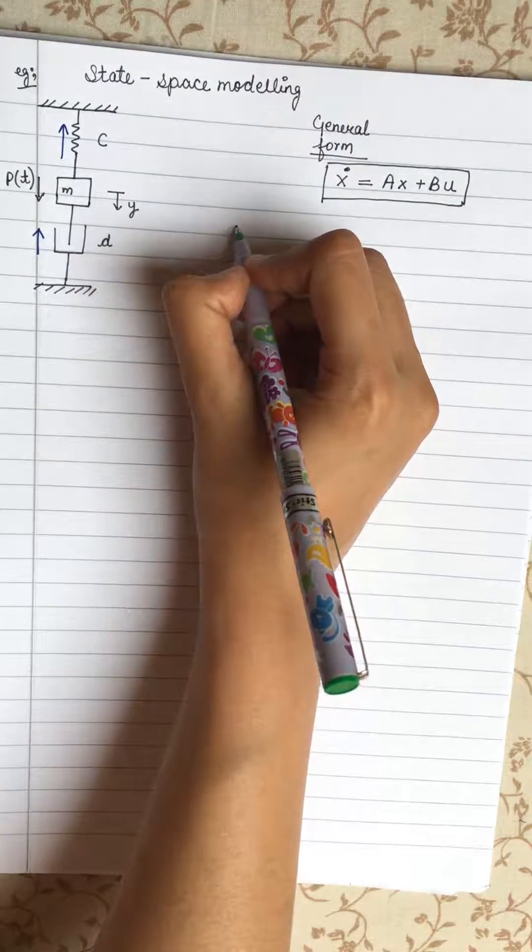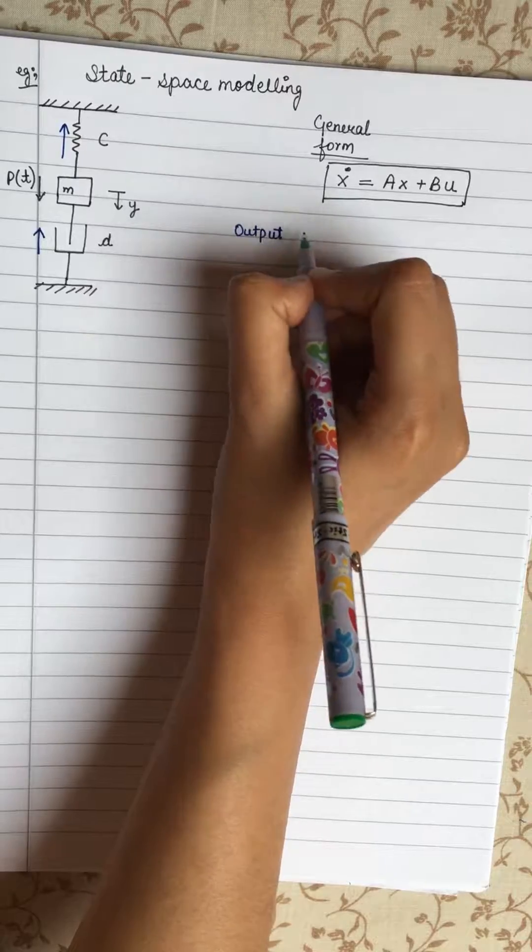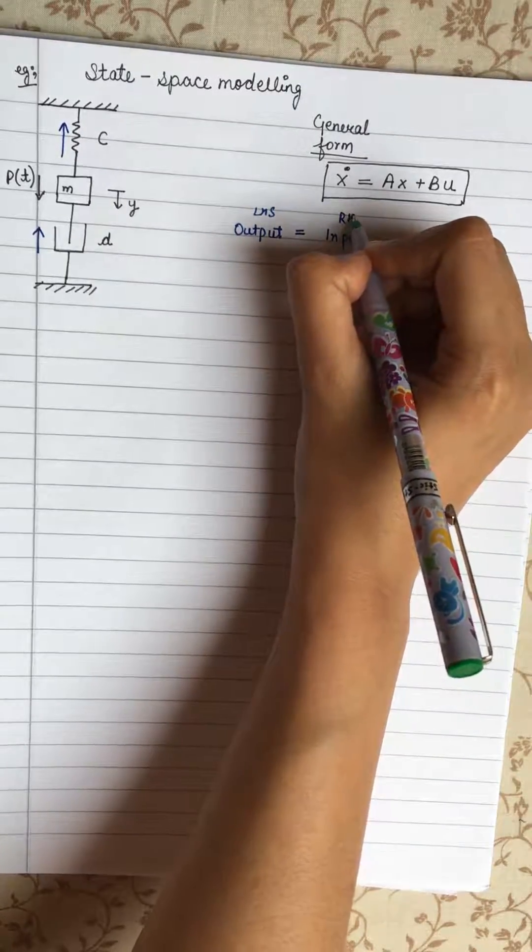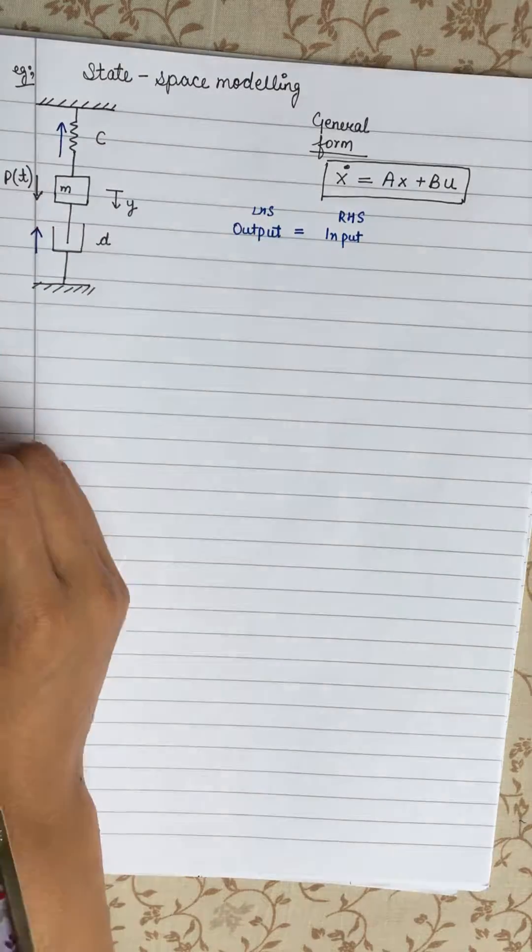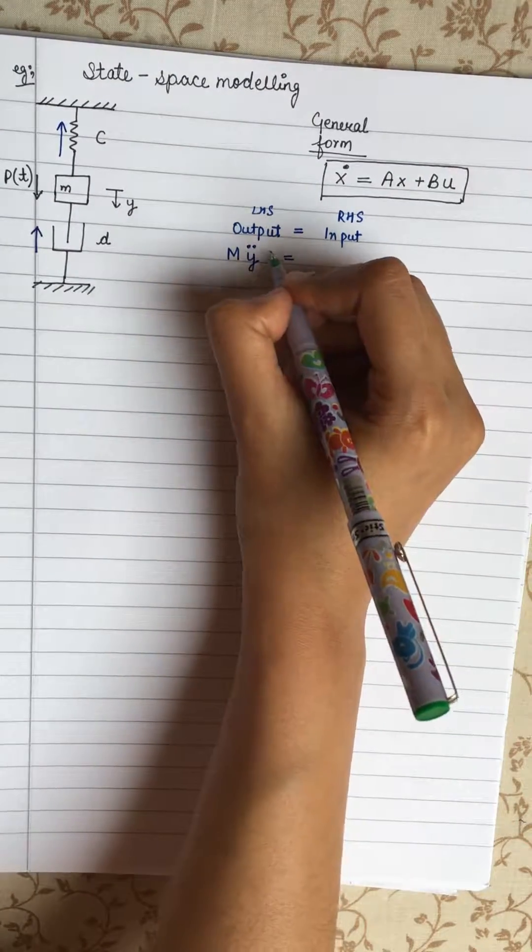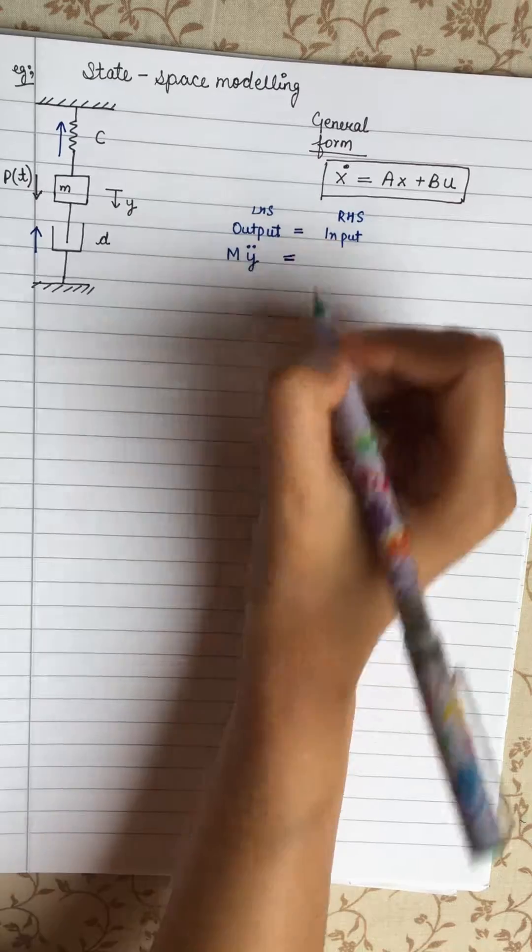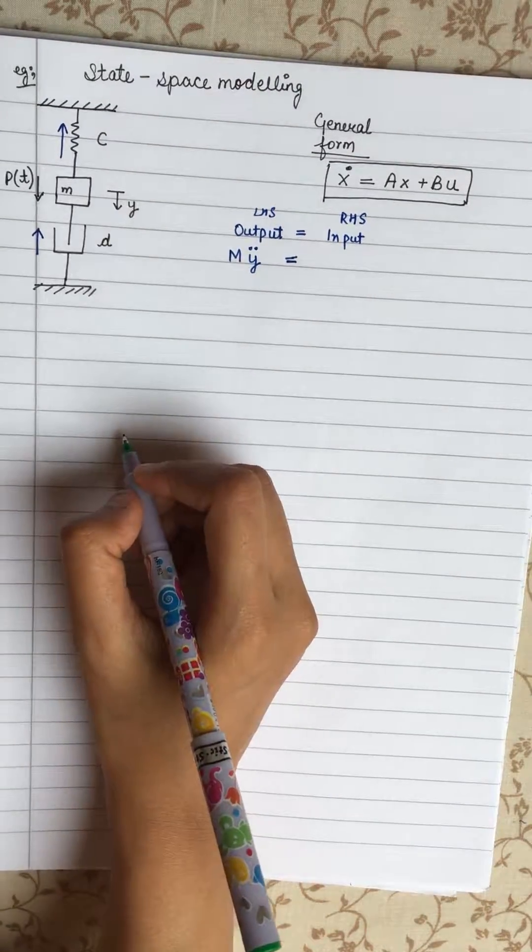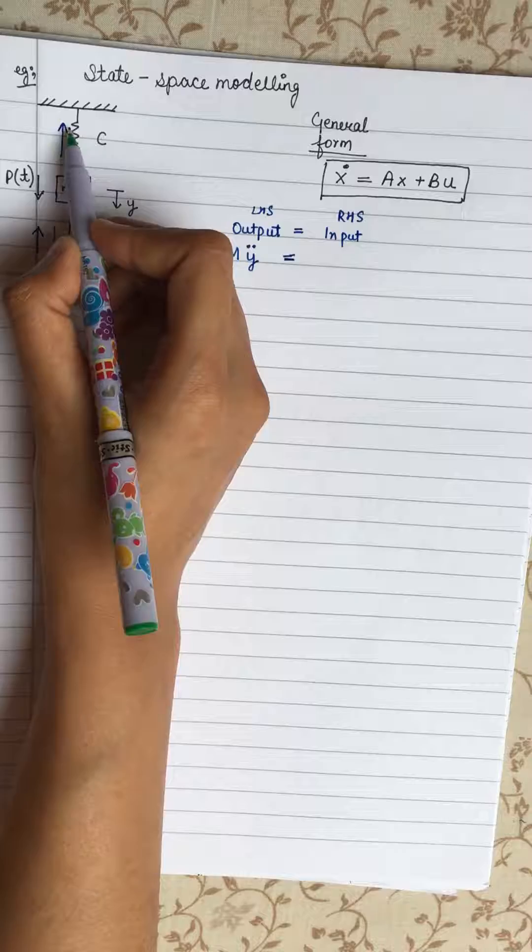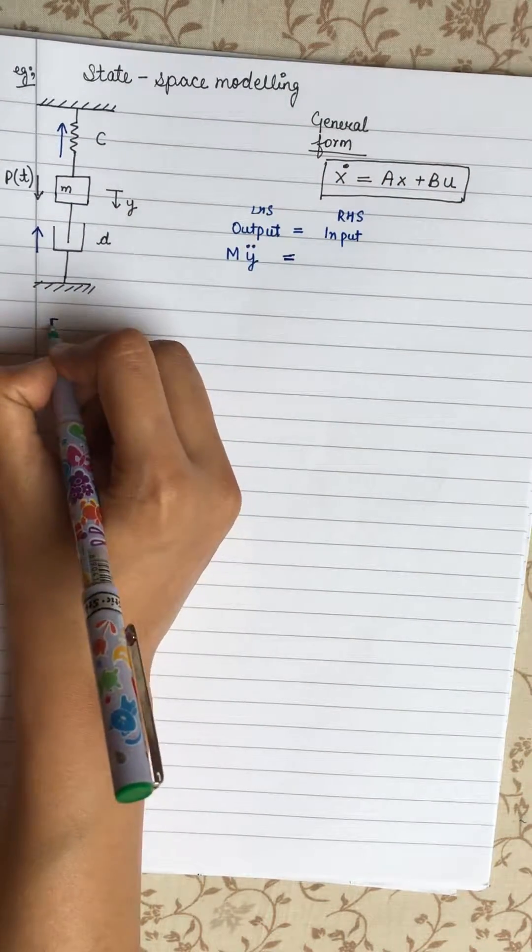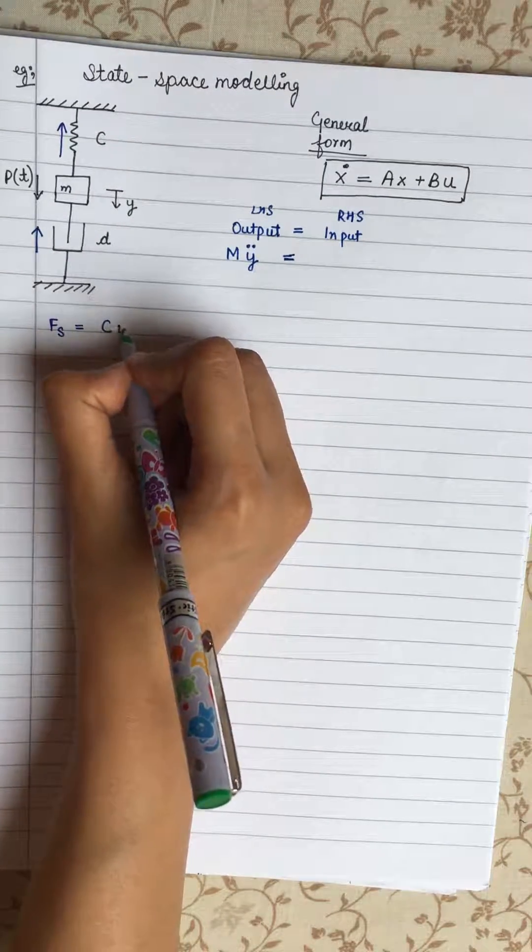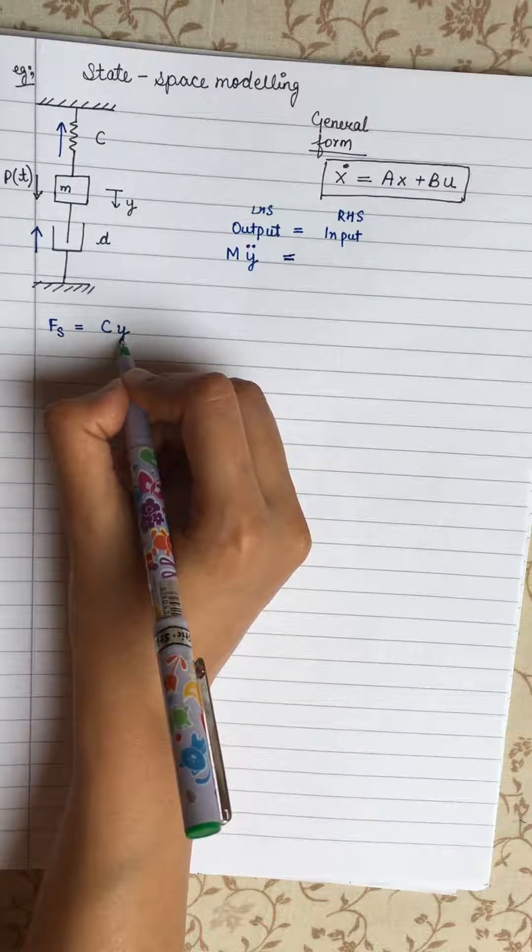So now let's make an equation. The equation always makes with output on the left hand side equals input on the right hand side. So output in this system will be our force. So it will be M Y double dot. We can ignore that T because it's not necessary. Then in the input side, we got a spring. Force of spring can be written as C into Y. C is a spring constant and Y is the displacement. So here it's acting opposite to this Y direction. So it will be minus CY.